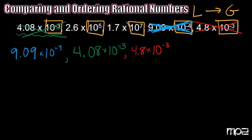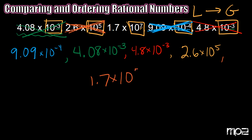We've already done the work for that one. Now I'm left with two numbers and I'm comparing exponents. Five is going to be a lot smaller than seven, so my next number is 2 and 6 tenths times 10 to the fifth power. And last but certainly not least — oops, forgot to cross it out — is 1 and 7 tenths times 10 to the seventh power.